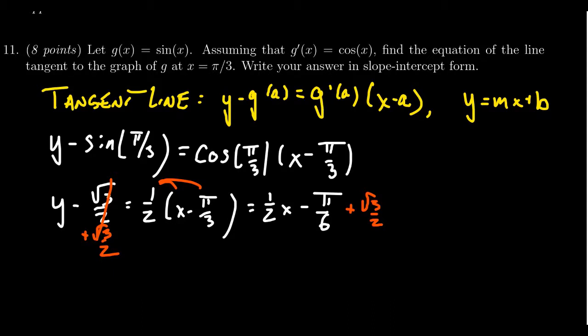This will give us y is equal to—you can write this as either 1 half x, or if you prefer, you can write it as x over 2. It doesn't make much of a difference to me. It's the same number either way. I'm going to leave it as 1 half x just to make the slope more prominent.